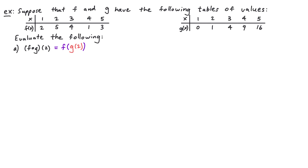So what is g of 2? Looking at the g table, when we input 2 the corresponding output is 1. So g of 2 is equal to 1. Now we take that number and plug it into the f function to figure out f of 1. Going to the table of values for f, when we plug in 1 into f we get the output 2. So f of 1 is equal to 2, and this is f composed with g of 2.